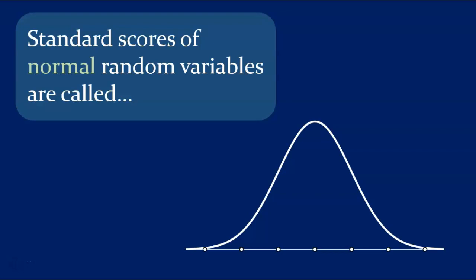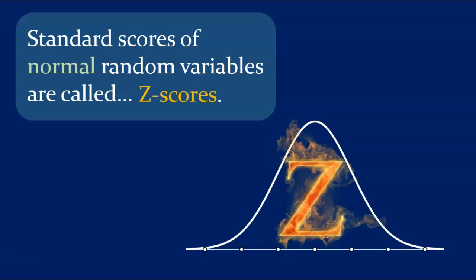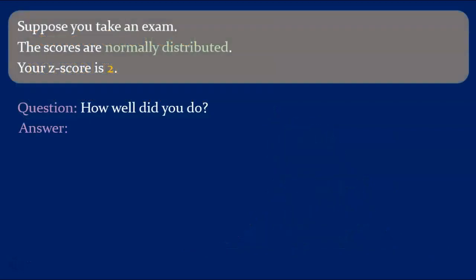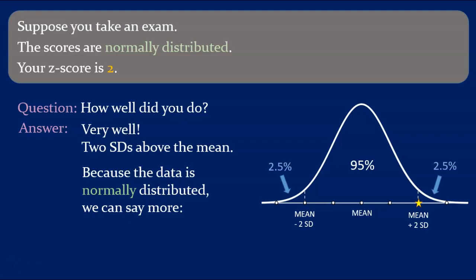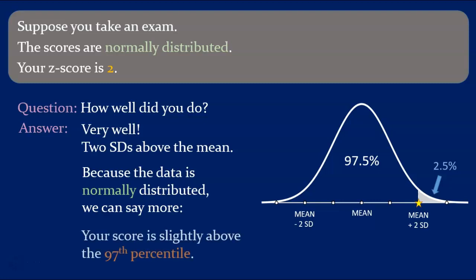Standard scores of normal random variables have a special name. They're called z-scores. I'll do another example using this terminology. Suppose you take an exam. The scores are normally distributed. Your z-score is 2. How well did you do? Very well. Two standard deviations above the mean. And because the data is normally distributed, we can say more. The normal rule tells us that approximately 95% of the data lies within two standard deviations of the mean, which leaves only 2.5% for each tail. Thus, your score is slightly above the 97th percentile.